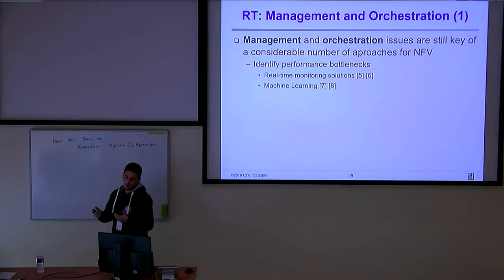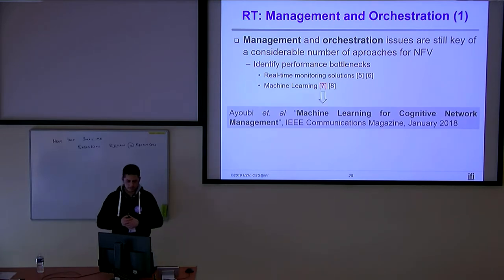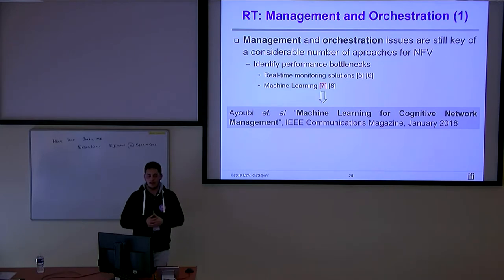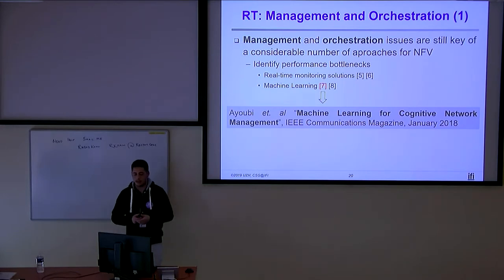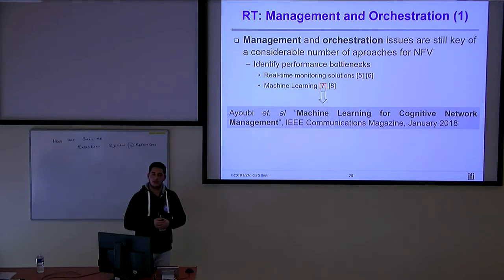Another candidate to solve the problem of identifying performance bottlenecks is machine learning-based solutions. There are a lot of works in this direction. For example, in a work published in the IEEE Communications Magazine in January of last year, the authors discussed the role that machine learning can play regarding NFV issues. The authors highlight research opportunities by using machine learning for failure prevention and detection of degradation patterns in NFV-enabled networks. There are a lot of opportunities to explore machine learning to identify patterns and misbehaviors in an SFC or in a unique VNF.